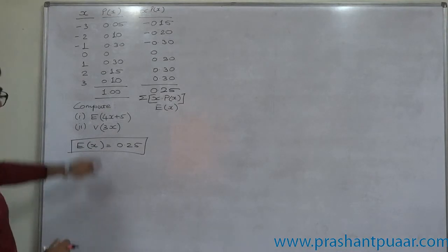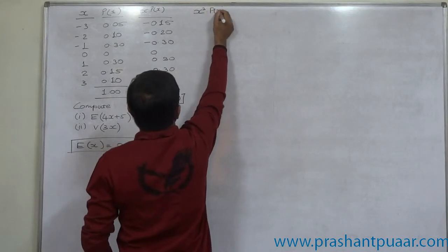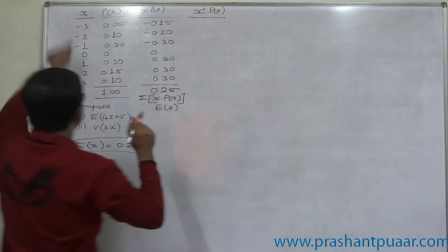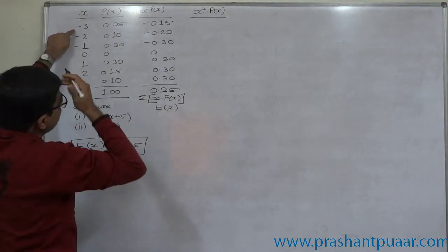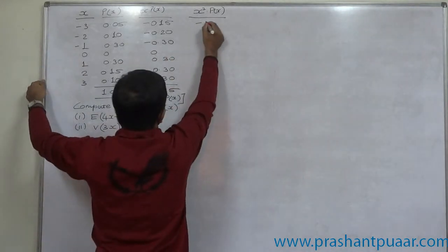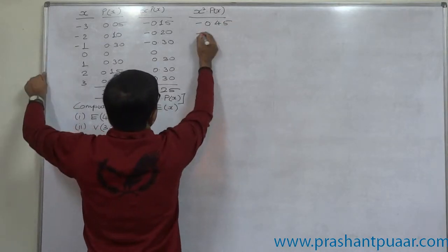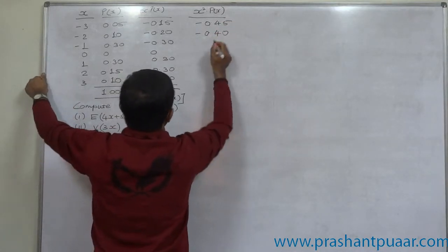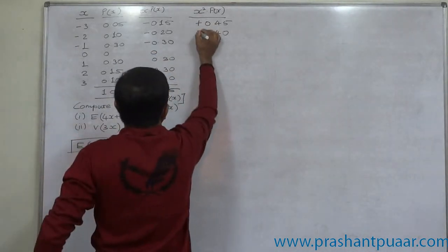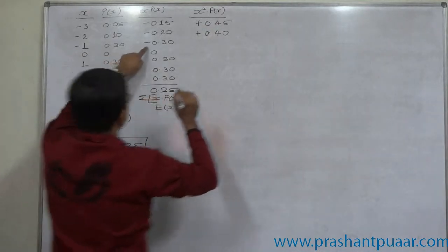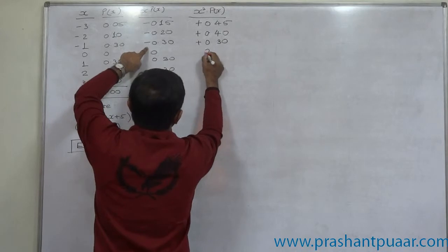Now for calculation of V of x, first we have to prepare the fourth column x square into p of x. That means x into x into p of x. Minus 3 into 0.15 is minus 0.45. Minus 2 into 0.2 is minus 0.4. Minus 1, these are positive values actually. Minus 1 into minus 0.3 comes to 0.3.